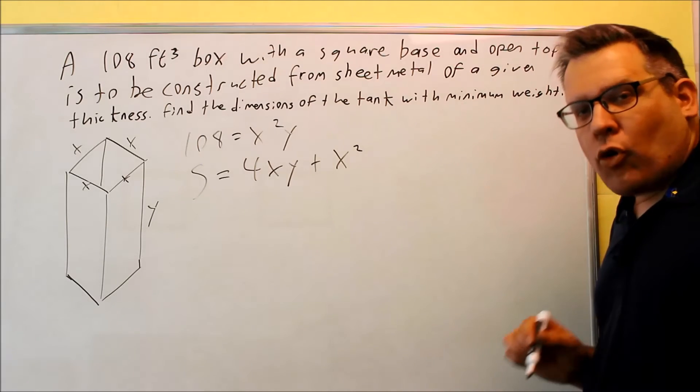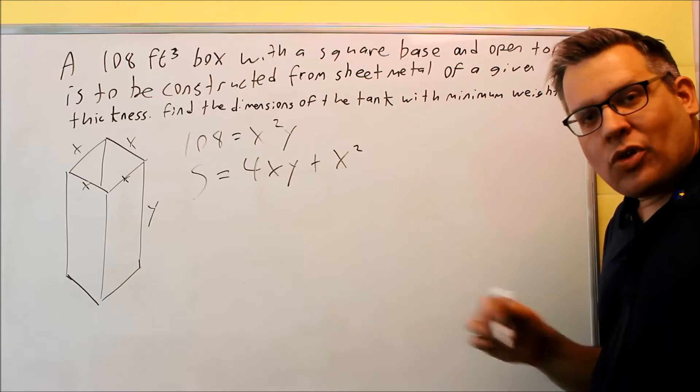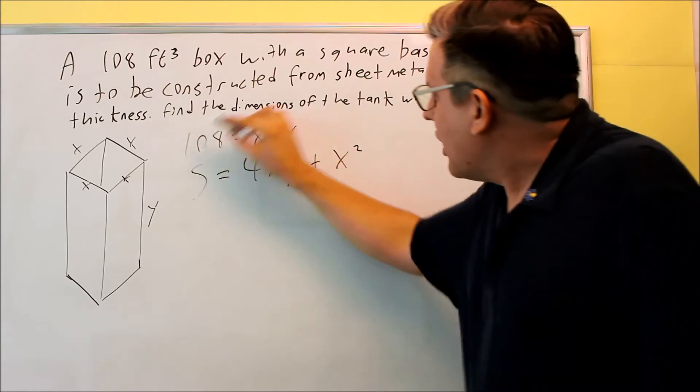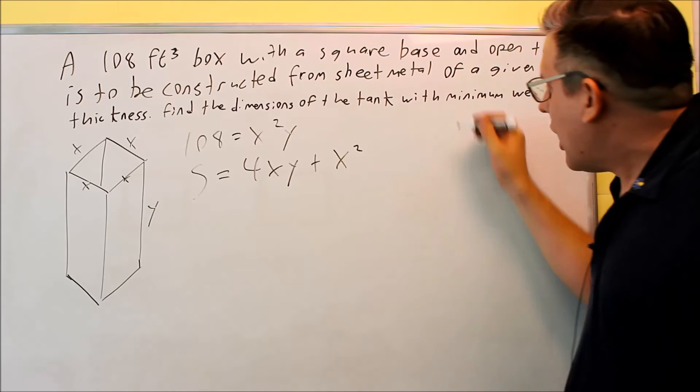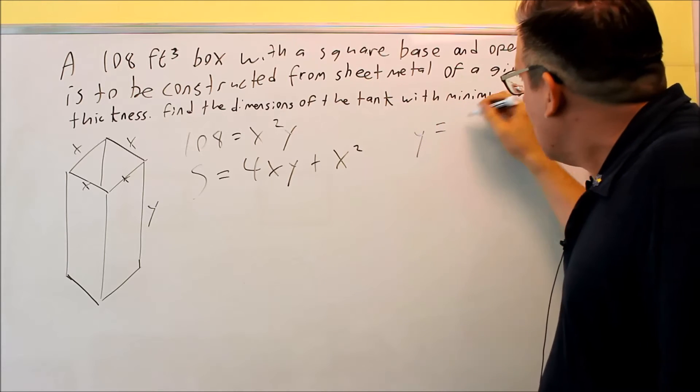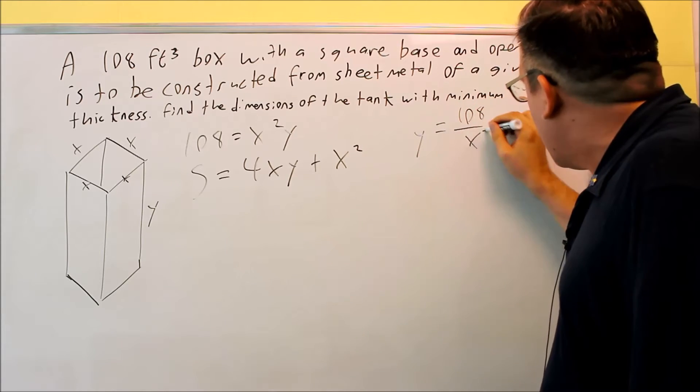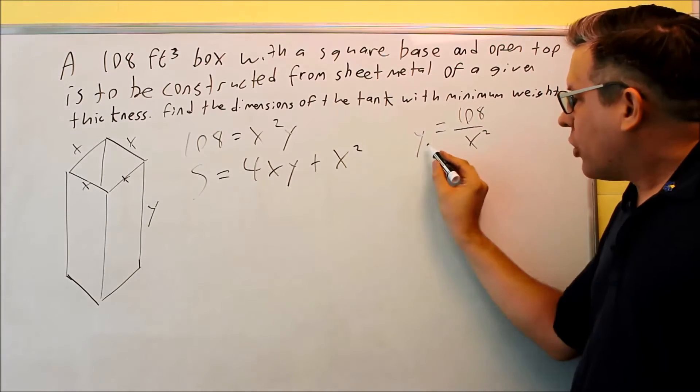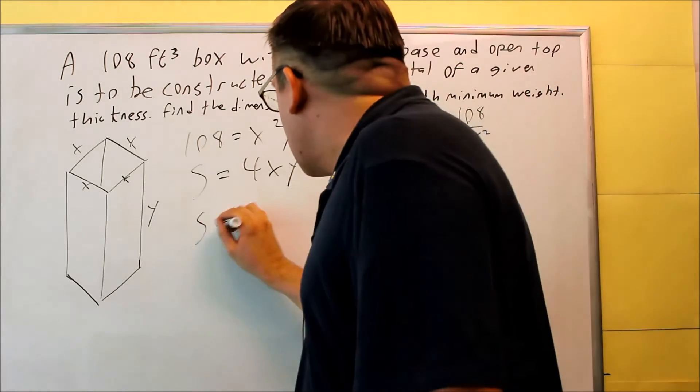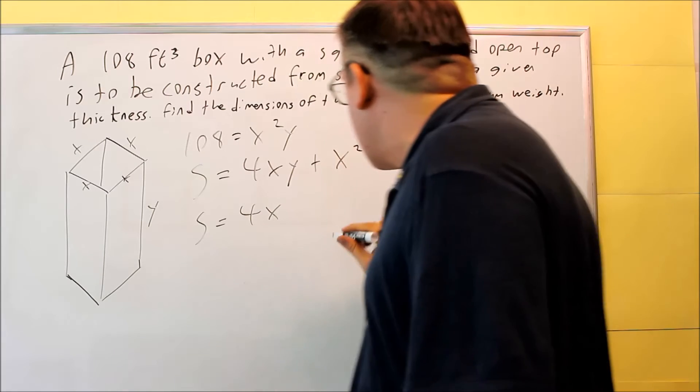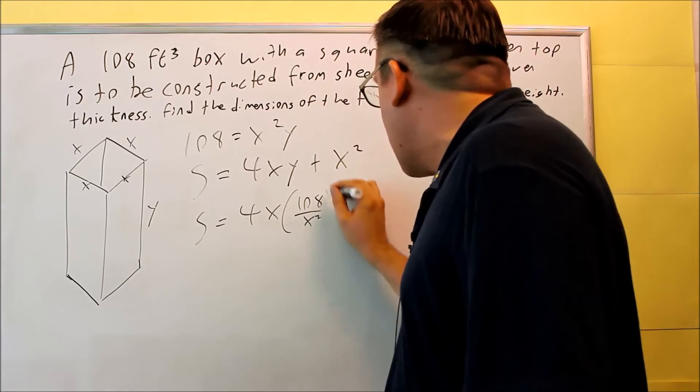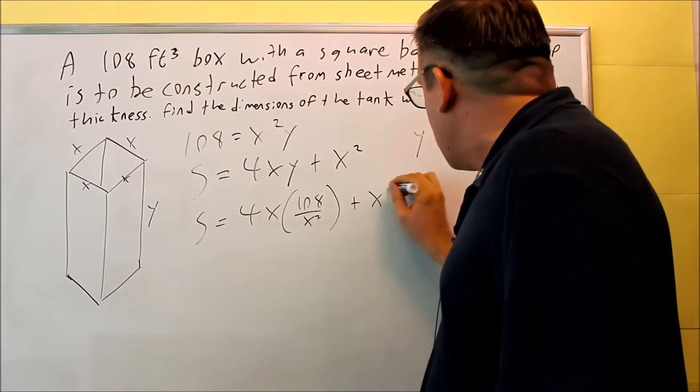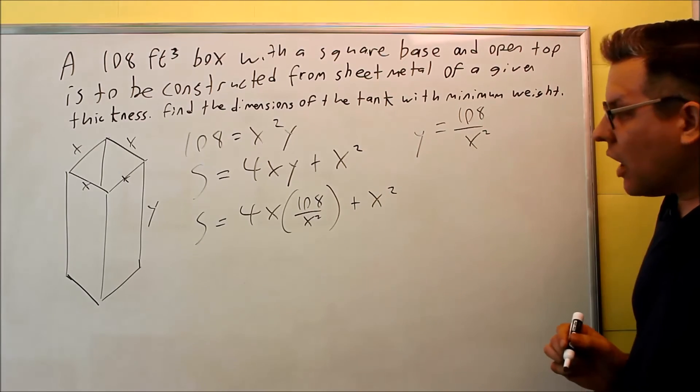So it's just going to be S equals. Now, like all the other problems we've done before, you want to have only one variable in your problem. So what I'll do is I'm going to take this first equation we've come up with and solve that for Y. So Y is equal to 108 divided by X squared. You want to put this into the Y right here. So S is equal to 4X, and then instead of the Y, I'm going to put in 108 over X squared, and then I have the plus X squared over here on that side.